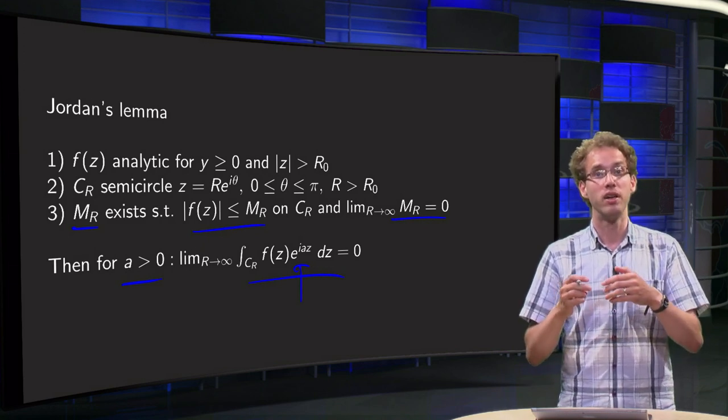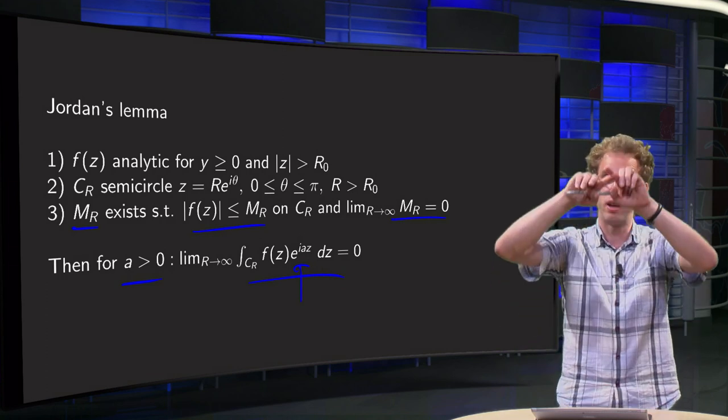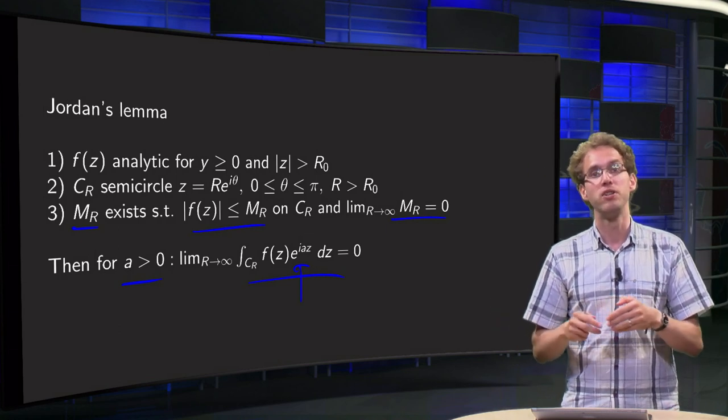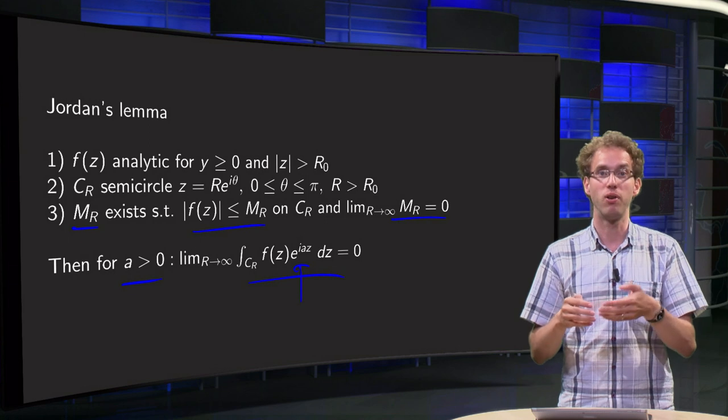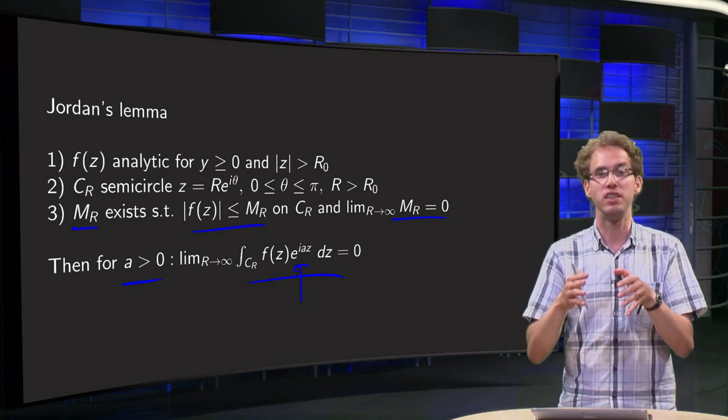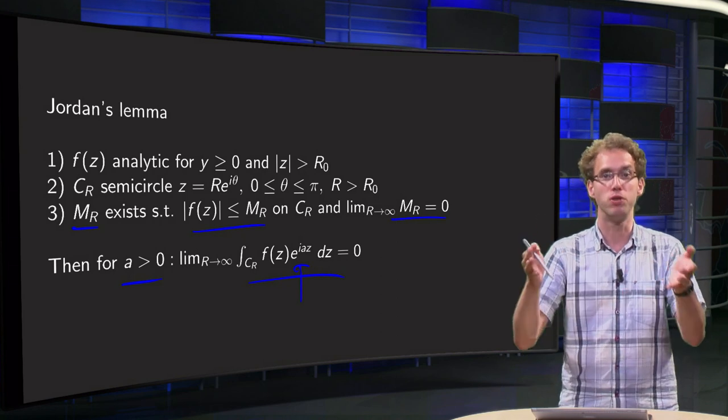Because even if your function decays to zero, still the path blows up as π times r. So even if your function goes to zero like say 1 over the square root of r, then the integral would be 1 over the square root of r times πr, would still blow up.